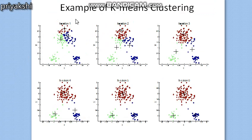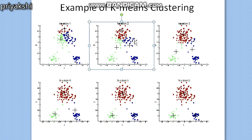After selecting the initial centroids, we have numerous other points. For each data point, you find the distance to every centroid. Some data points will belong to whichever centroid they are closest to. You can see the brown data points belonging to one centroid, the blue data points belonging to another, and the green data points belonging to the third. We now have three clusters formed.